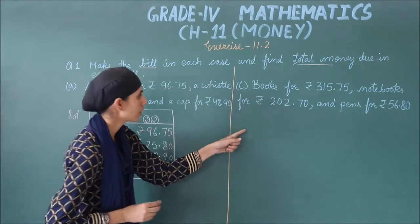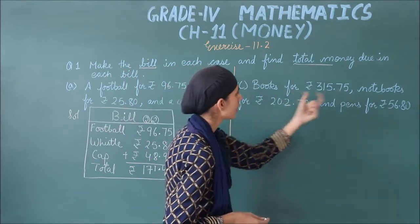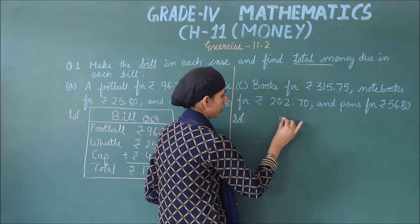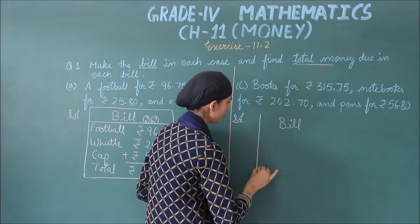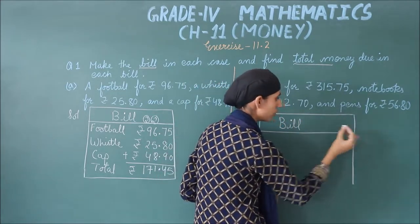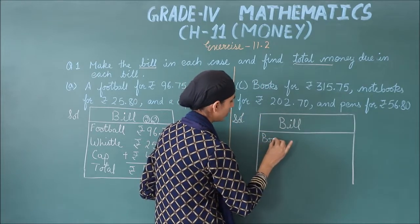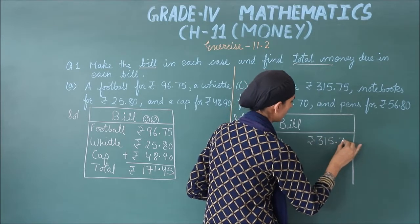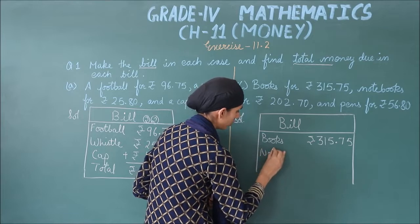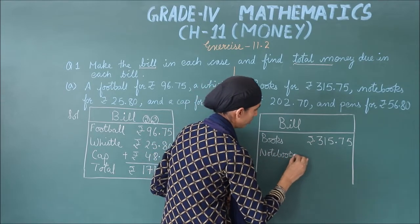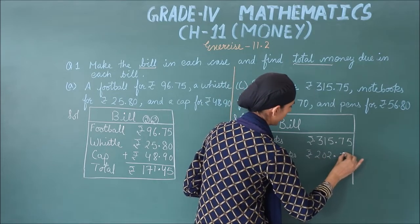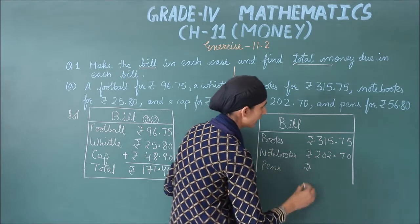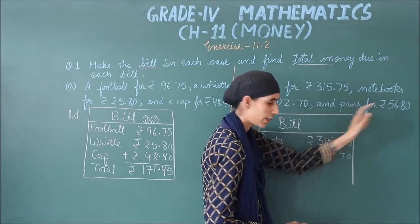Next, we will understand Part 3. You have purchased books, notebooks, and pens. Now we will create their bill. Write 'Bill', and write the name and cost of each item you purchased. Books: ₹315.75. Next: Notebooks: ₹202.73. And next, Pens: ₹56.80. Write these numbers carefully so you don't make mistakes.